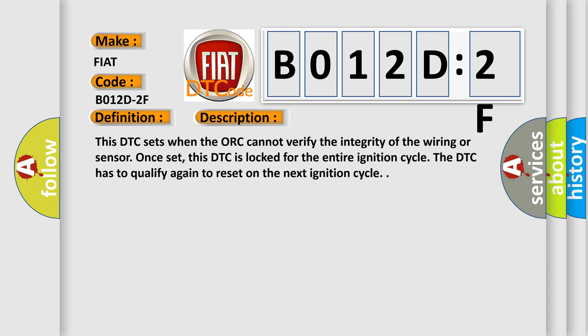This DTC sets when the ORC cannot verify the integrity of the wiring or sensor. Once set, this DTC is locked for the entire ignition cycle. The DTC has to qualify again to reset on the next ignition cycle.